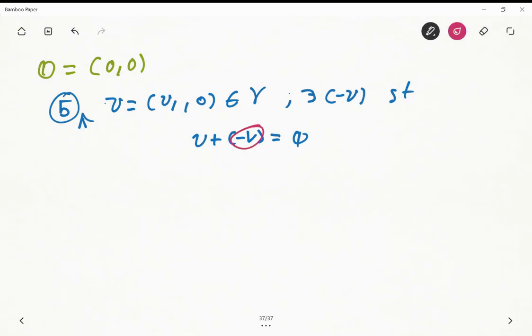So let's find this minus u. In this case is (u1, 0) plus (alpha_1, 0). I'm going to determine the value of alpha_1 equals to the 0 vector.